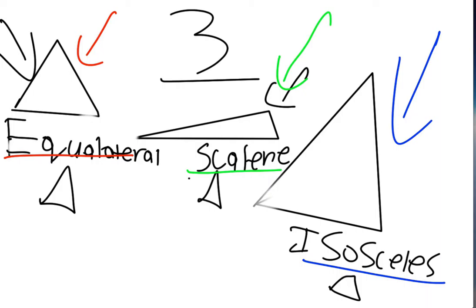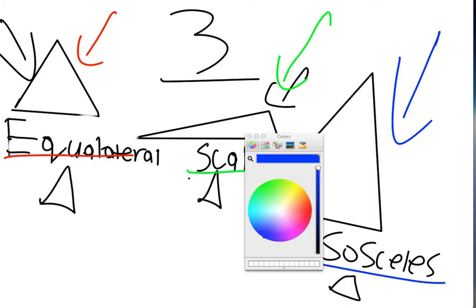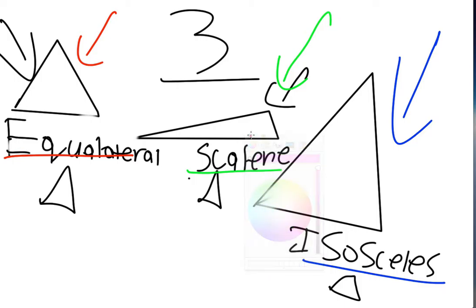So an equilateral triangle, which I have to point out has an I in it. Is a triangle in which all three sides are congruent to one another. All three sides have the same length.